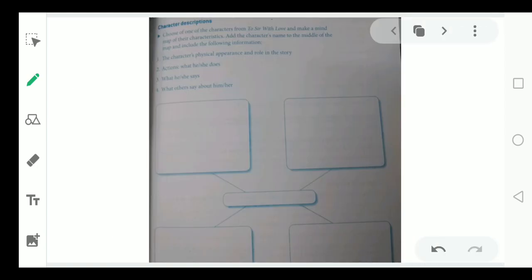Here you are going to make a character description, character sketch. The first point you will write here, the character's physical appearance and role in the story. Keep it in your mind, we are going to write about to serve with love, a topic given in your unit number two, education.